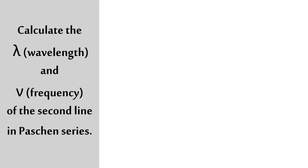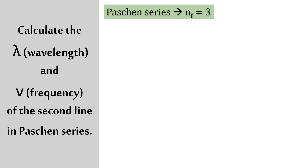Now we're going to look at how to find the wavelength and frequency of the second line in the Paschen Series. This example is applicable for other lines as well — first line, second line, third, fourth, fifth, and so on. First, we start by knowing that n_final for Paschen Series is 3.